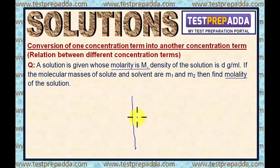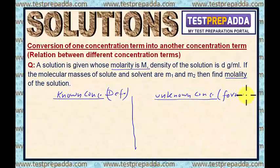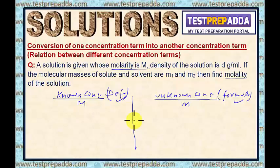In this method, you draw a vertical line. On the left hand side, you write the known concentration, and on the right hand side, you write the unknown concentration. For the known concentration, use the definition. For the unknown concentration, use the basic formula of that concentration. In this case, molarity is the known concentration, so I will use the definition for molarity. And molality is the unknown concentration, so I will use the formula for molality.